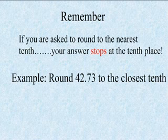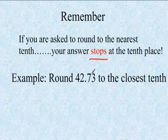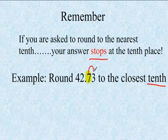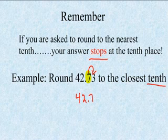Remember, if you are asked to round to the nearest tenth, your answer will stop at the tenths place. So for 42.73, we want to round to the closest tenth. Our tenths place is our seven. When rounding decimals, you just stop at that place value — unlike whole numbers where the rest become zeros. We look next door: because our three is four or less, our seven stays the same. So 42.73 becomes 42.7.